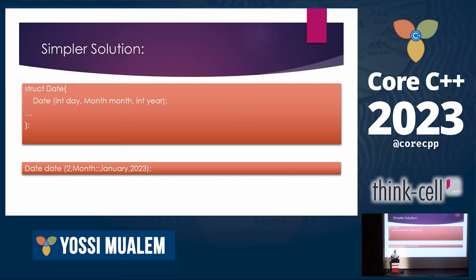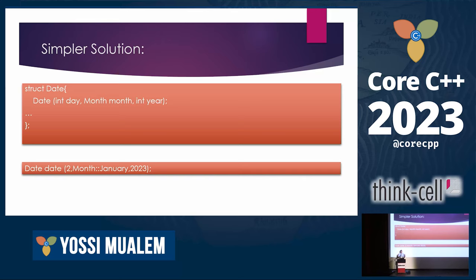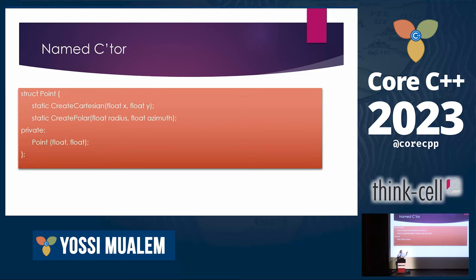Obviously this is not a generic solution — we can't always replace one of the arguments with an enum. Say we have class point that can be created either by Cartesian notation with x and y, or by polar notation with radius and azimuth. We can't replace any of them with an enum. Strong types may then be a good solution, but it's important to know they're not the only solution. We can have named constructors — the constructor is private, and when we want to create an instance we call createCartesian or createPolar. By the name, it's obvious which notation we are using.